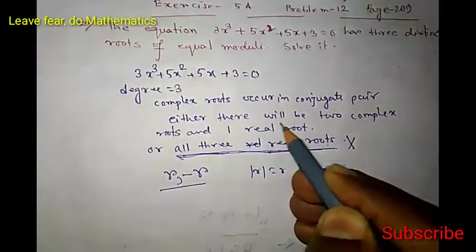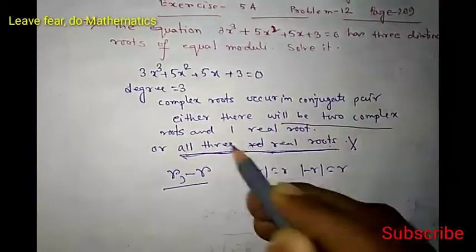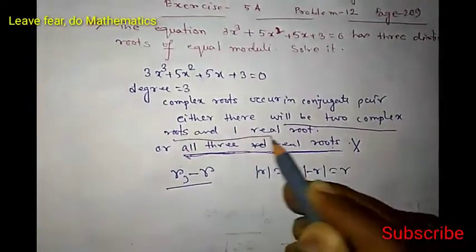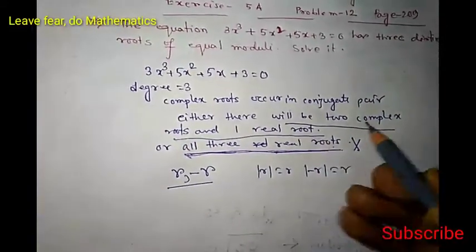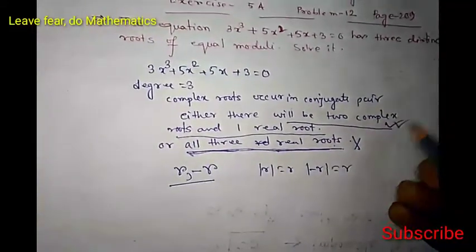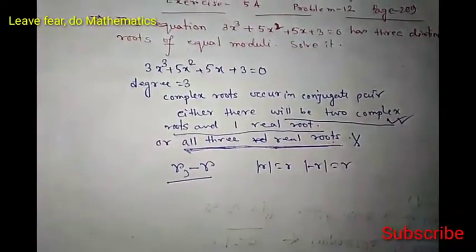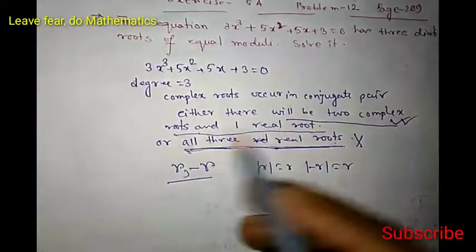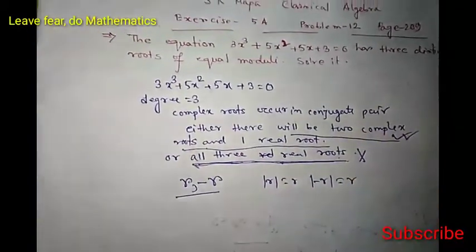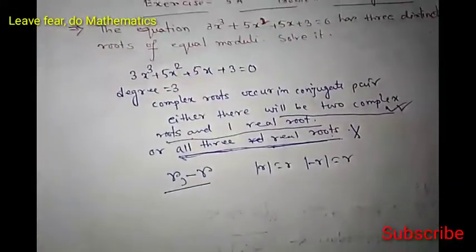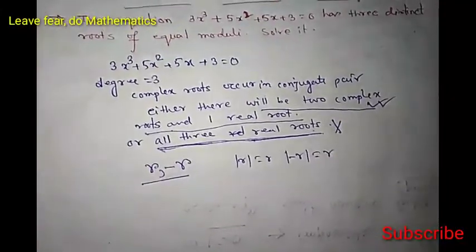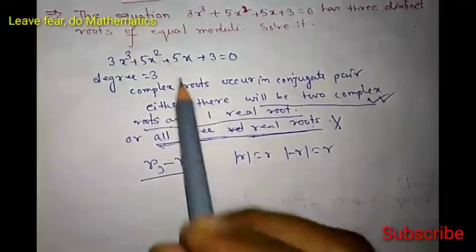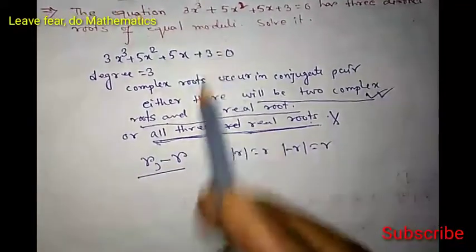So the possible case is that there will be two complex roots and one real root. We have to find the two complex roots of equal modulus and the real root. Now it is very easy — we don't need to work hard to get the roots. Look at the equation carefully.